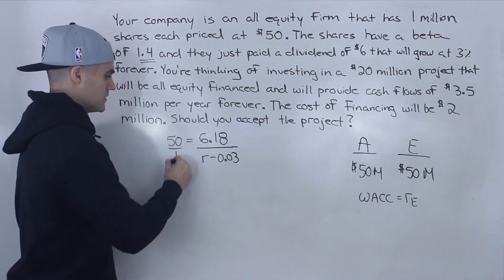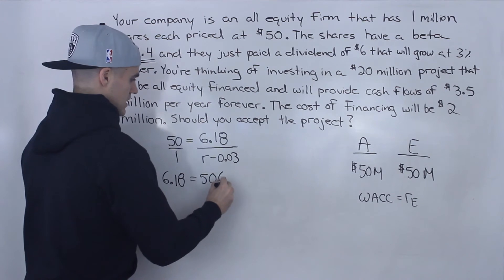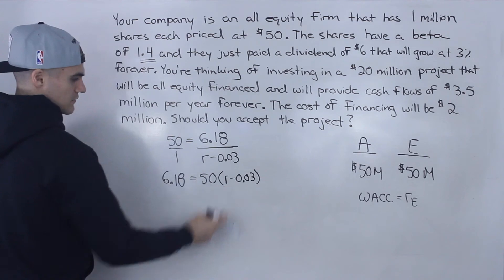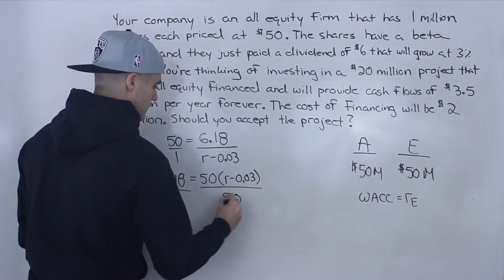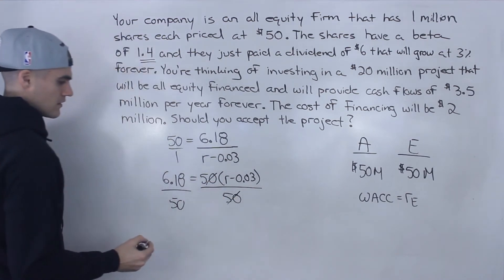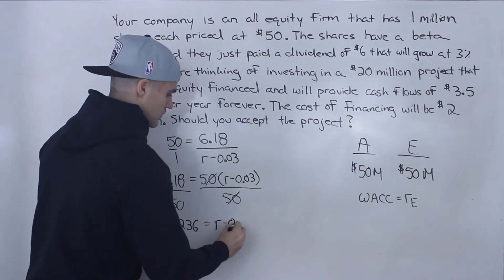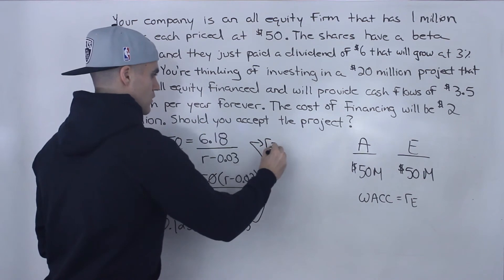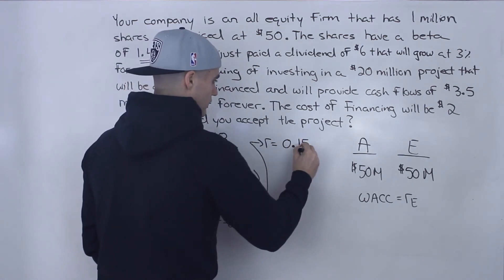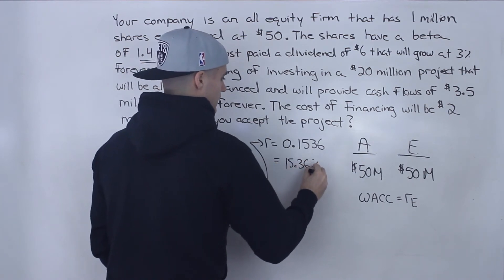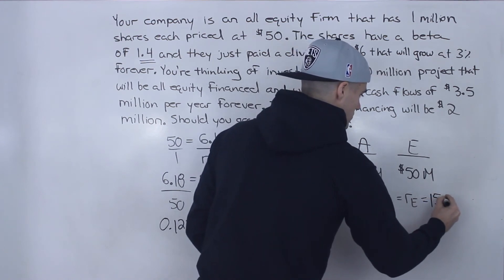To solve for RE, divide both sides by 50: 6.18 / 50 = 0.1236, so 0.1236 = RE − 0.03. Adding 0.03 to both sides gives RE = 0.1236 + 0.03 = 0.1536, or 15.36%. That is the return on equity, which also equals the weighted average cost of capital for this all-equity firm.